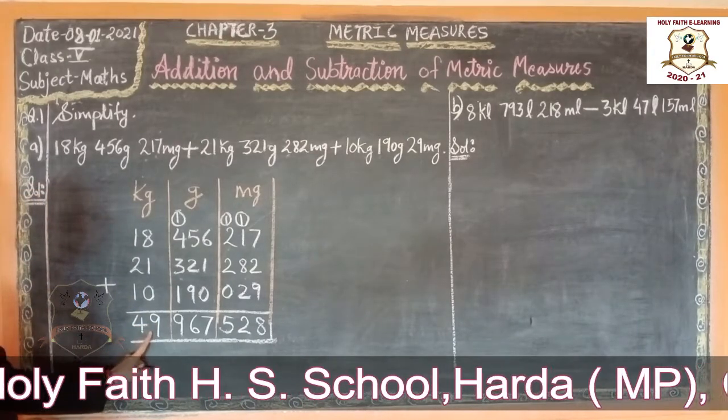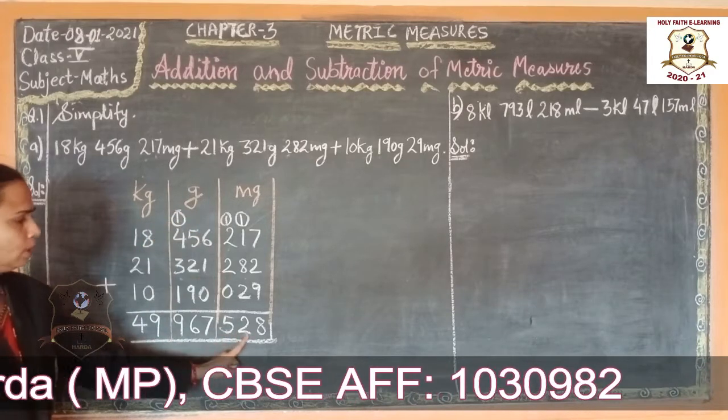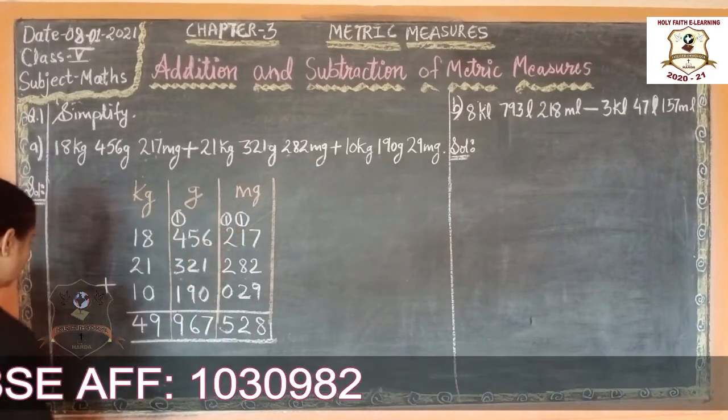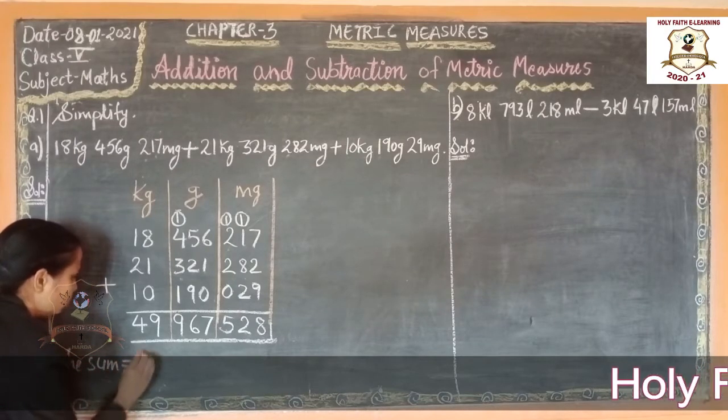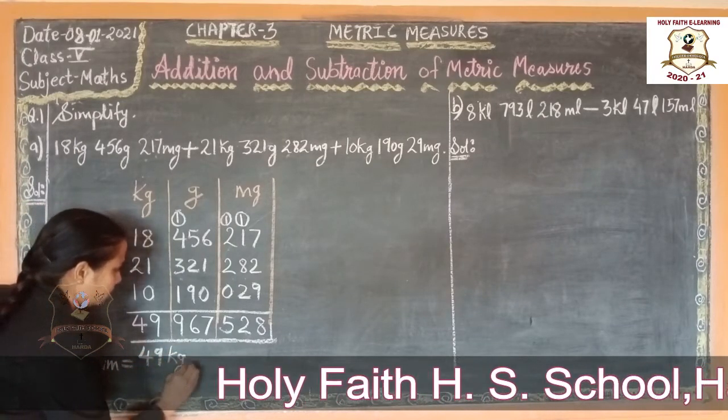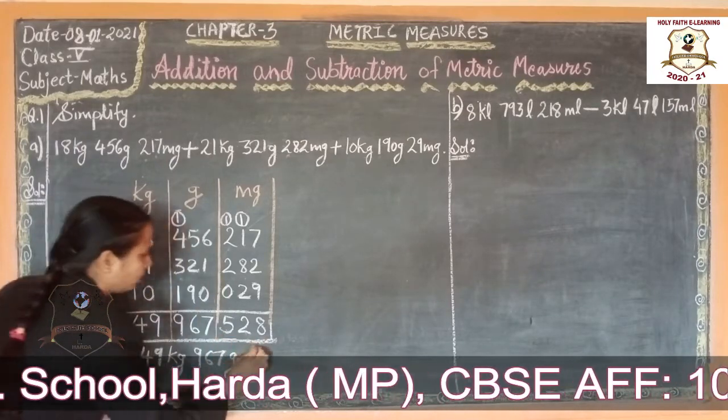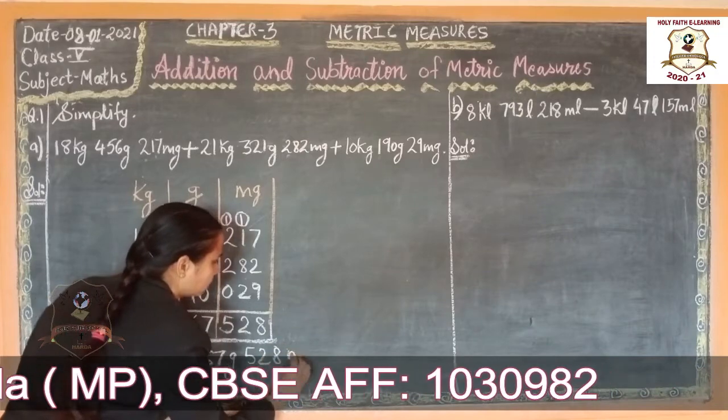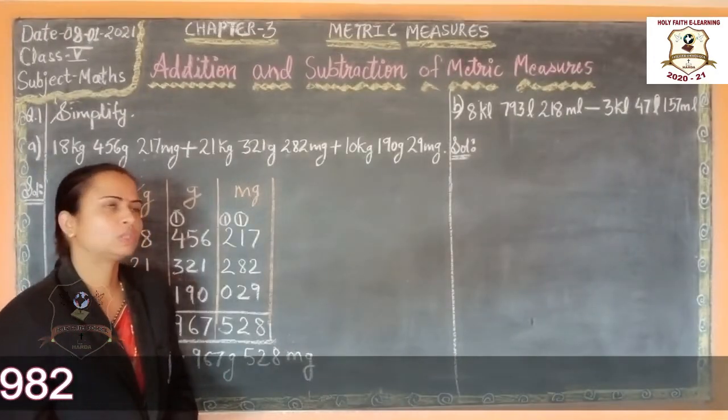So the sum is 49 kg, 967 gram, 528 mg. Right here. The sum is equal to 49 kg, 967 gram, 528 mg. Understood. Now solve next question.